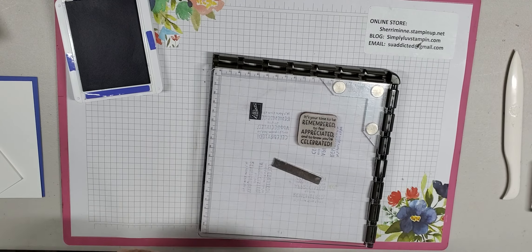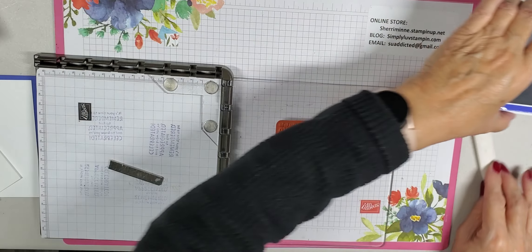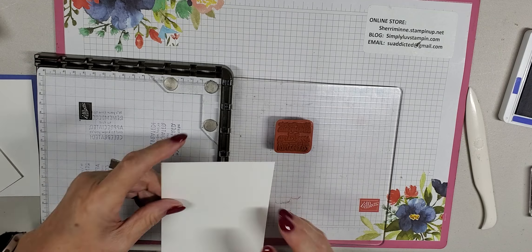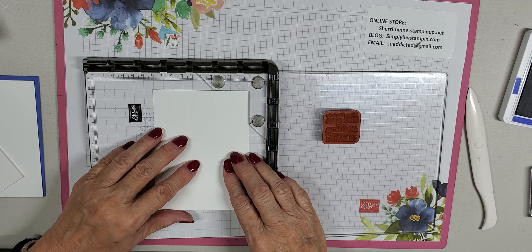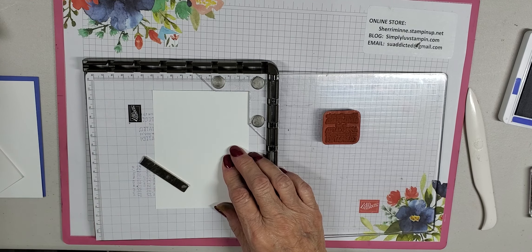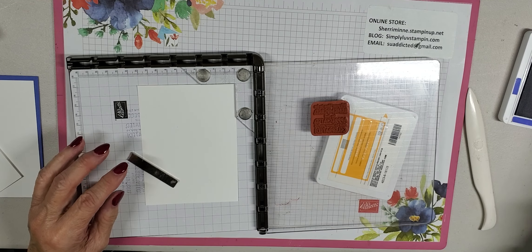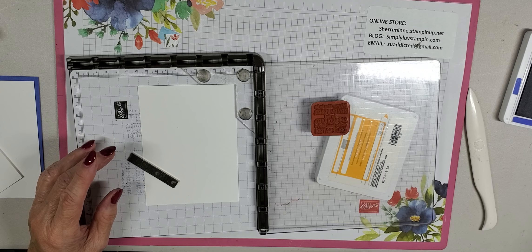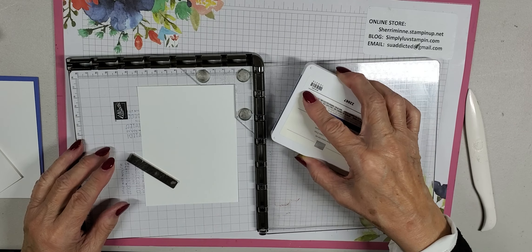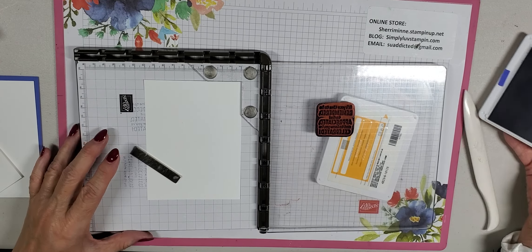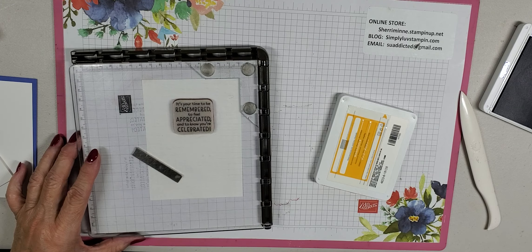Then we're going to work on the inside of our card. And I have my inside greeting on a Stamparatus. I'll put my ink over there. We will take this, set it right here. I like to put something under the lid here, just to make it one level so that when I'm inking it up, it works just fine. Nice and level. That way you can ink it without too much issue.